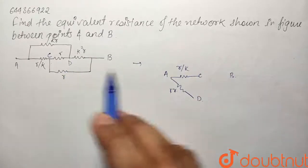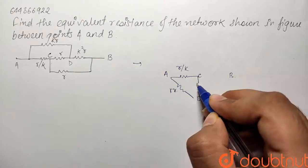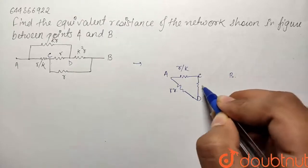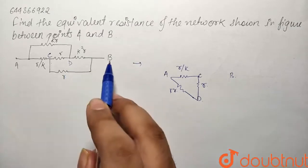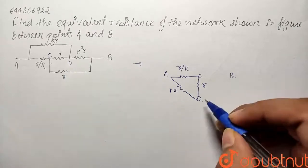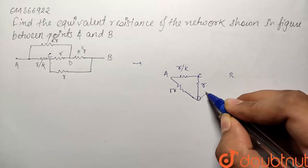Our next resistor is between C and D and its value is R. So it will become R here and the next resistor is between D and B that is K square R. So D and B has a resistor of K square R.